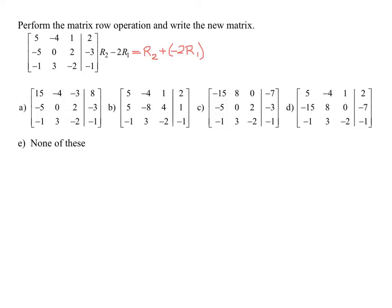So I'm going to start with writing out my row 2. Here's my scratch work, here's my row 2. It's negative 5, 0, 2, and negative 3. Then I'm going to take negative 2 times row 1 and add it to it.